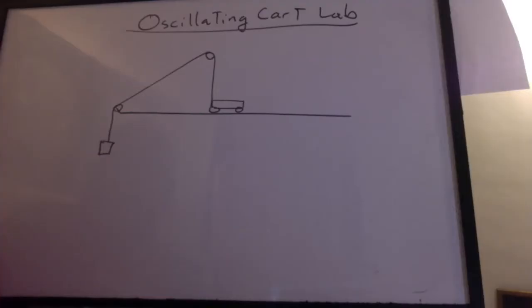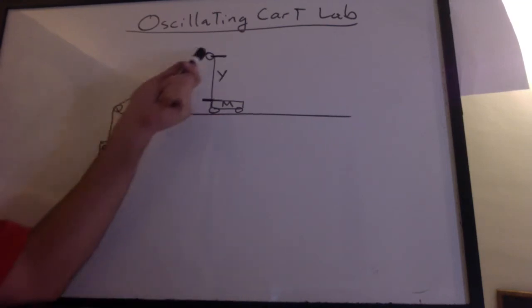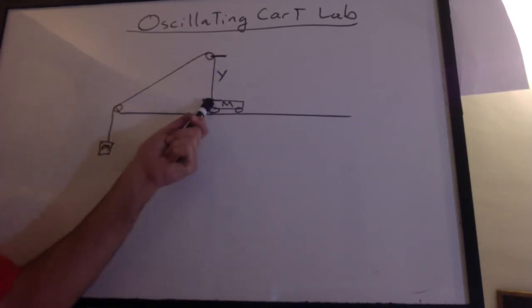We'll work with this diagram. Small mass here, large mass here. The distance from the pulley down to the top of the cart is Y. X equals zero here and we can go to either side.